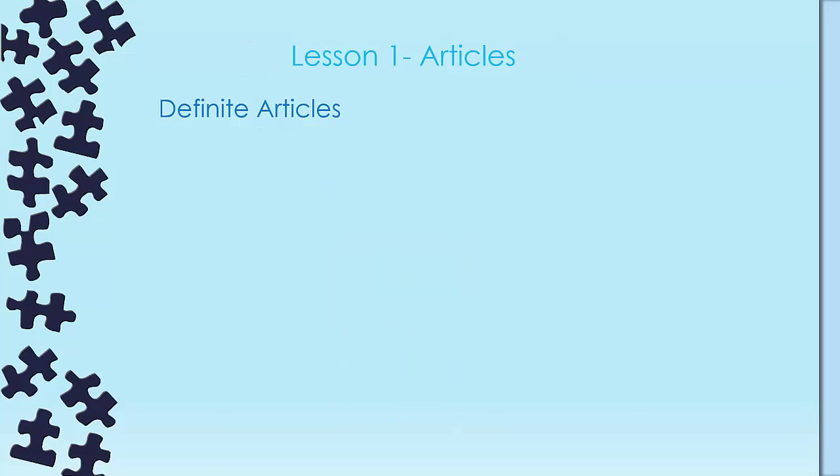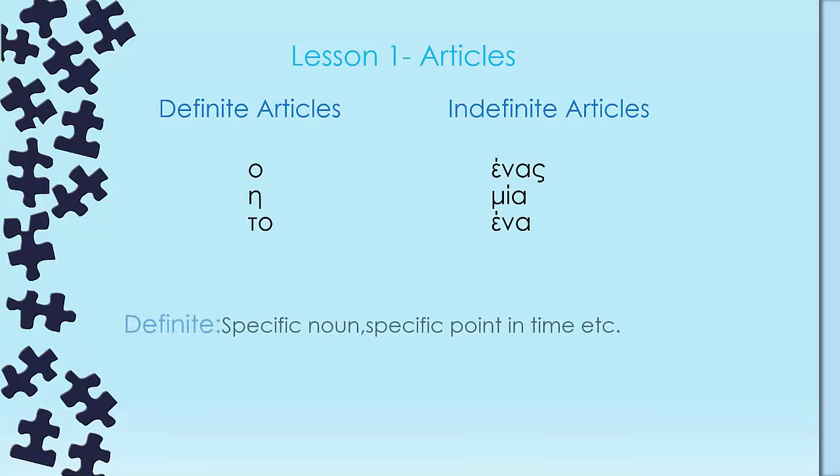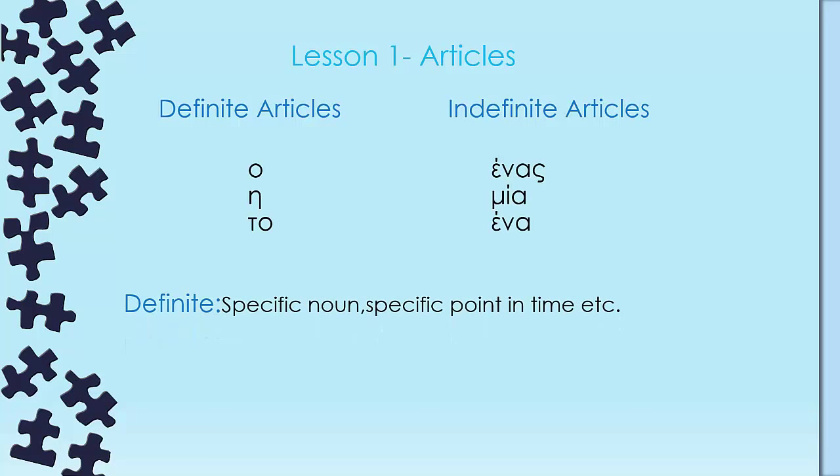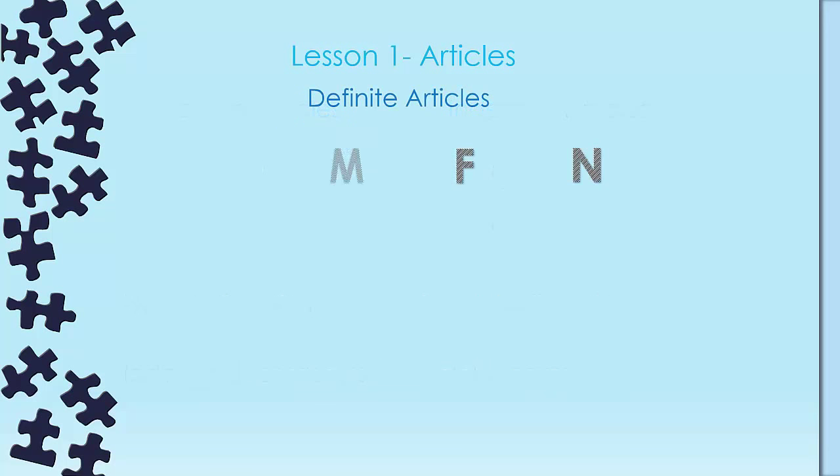In Greek we have indefinite and definite articles. Definite articles are used to talk about specific nouns or specific points in time, or generally when talking about specific things. Indefinite articles are used when we want to express some genericness or with uncountable nouns. Let's talk about definite articles for a while. We in Greek have three grammatical genders: male, female, and neuter.